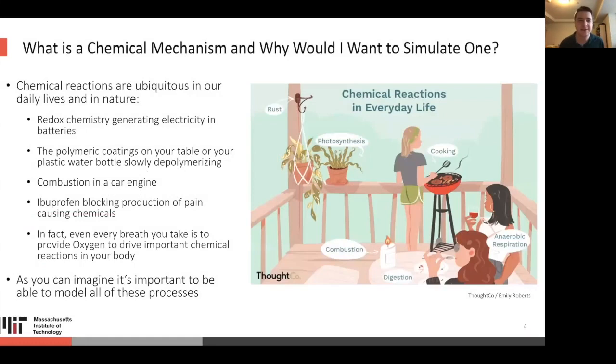Chemical reactions are ubiquitous in our daily lives and nature. Redox chemistry generating electricity in batteries, pharmaceuticals, polymer coatings on desks and water bottles, combustion in a car engine. It's very important to be able to model all of these processes.